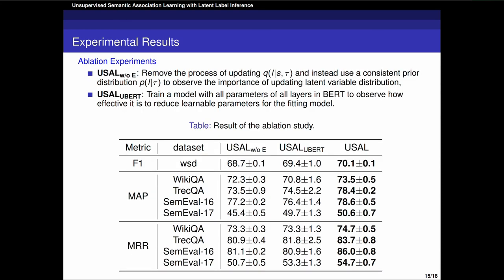We also do some additional ablation study to analyze the contribution of each component of the USAR framework. In the first column, we remove the E-step and update our model using the original prior distribution to verify the EM algorithm's effectiveness. In the second column, we train a model with all parameters of all layers in BERT to see whether our training setup really avoids overfitting. You can see that without E-step, the result has a big drop, and training all parameters of BERT will bring a large variance of performance.